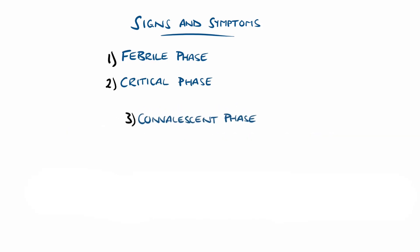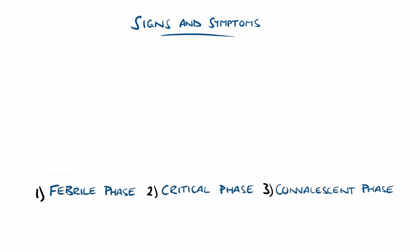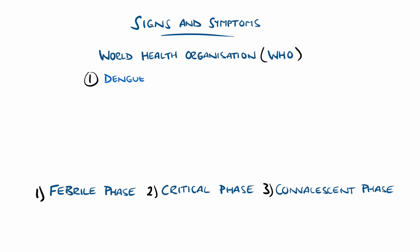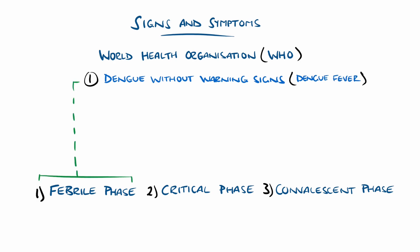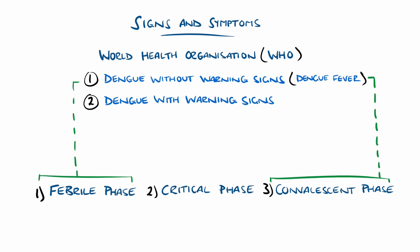The World Health Organization classifies dengue into three clinical categories. First is dengue without warning signs, also known as dengue fever, which roughly corresponds to the febrile phase, bypasses the critical phase, and ends with the convalescent phase. Second is dengue with warning signs, which includes any of the warning signs mentioned, where the patient may enter the critical phase.